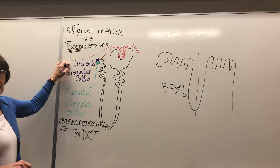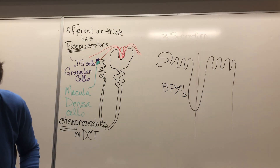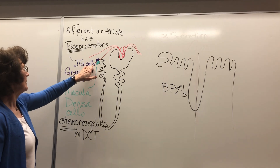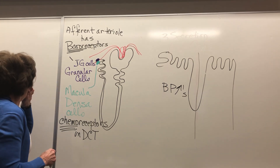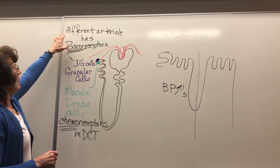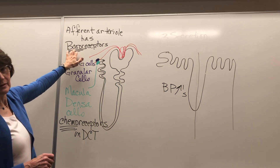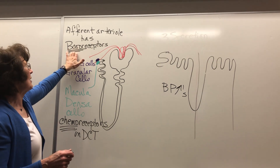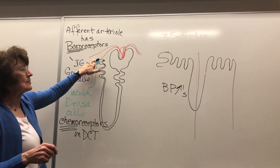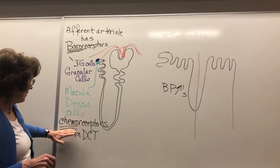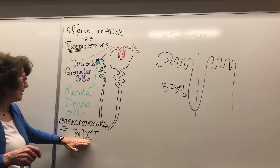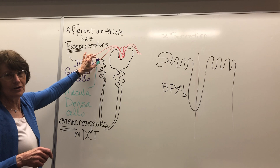Let's look at the diagram on page 61. Here's the complex — it's the juxtaglomerular complex. The juxtaglomerular cells, or granular cells (the purple ones), are going to be the baroreceptors. Baro means pressure, just like a barometer, and they're going to notice if there's low blood pressure in the afferent arteriole. If there's low blood pressure there, and if the chemoreceptors notice the concentration of sodium and chloride in the distal convoluted tubule — those two together make the juxtaglomerular complex.